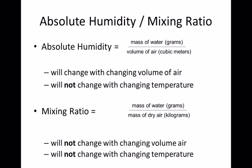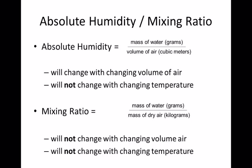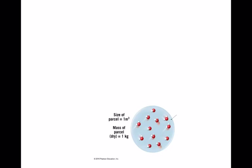We probably use mixing ratio more than absolute humidity. For mixing ratio, you take a chunk of air and divide the mass of the water in grams by the mass of the dry air — nitrogen and oxygen — in kilograms. Notice that if the volume changes, the mixing ratio stays the same.